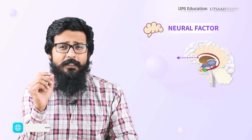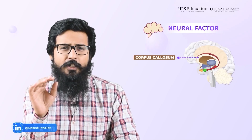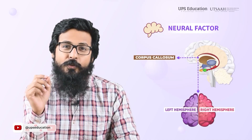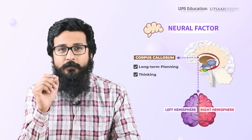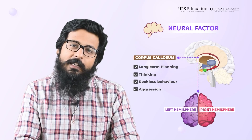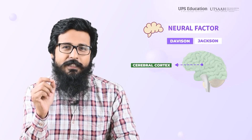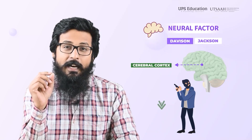Another brain structure, the corpus callosum, also plays a role in aggression. We know the main function of the corpus callosum is to make a link between the left and right hemisphere, but it is also involved in long-term planning and thinking, and damage to the corpus callosum can lead to reckless behavior and aggression. Interestingly, Davitian and Jackson found in their research that the cerebral cortex is less active in murderers compared to normal citizens, and they hypothesized that less activity in the cerebral cortex reduces the ability to regulate emotions.